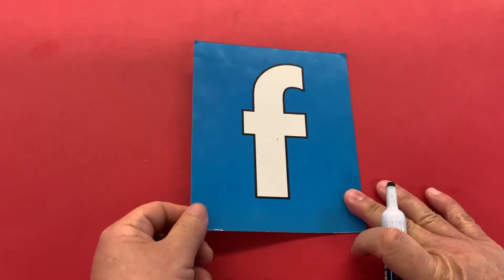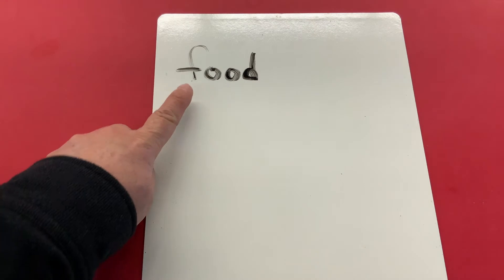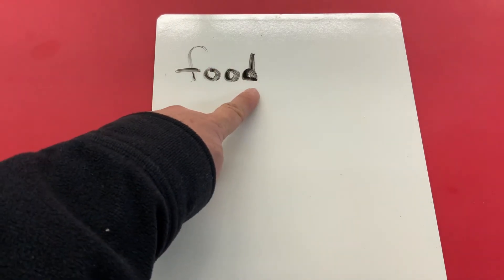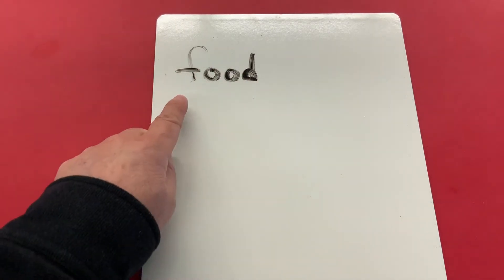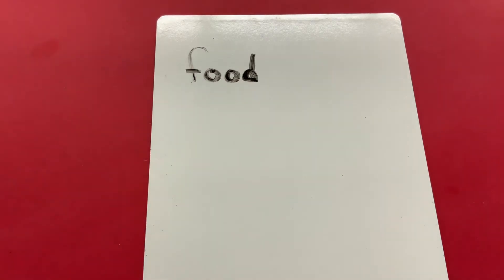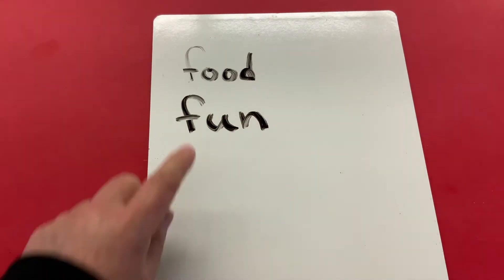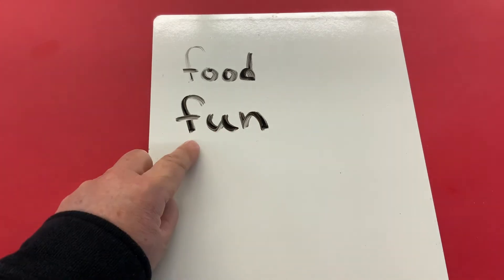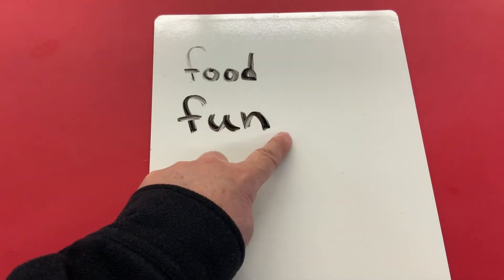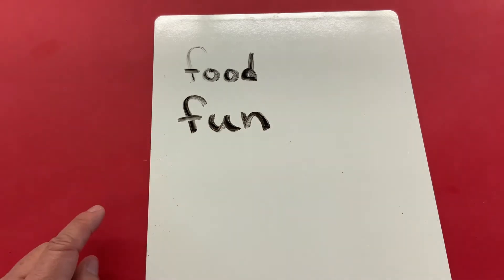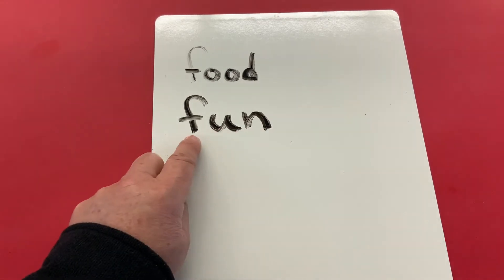Let's think of some words that begin with the sound F. Here's a word that begins with the sound F, and this word is food. Did you hear the F at the beginning? Another word that began with the sound F is fun. Did you hear the F at the beginning as I try to sound out the word? Fun — I hear it.